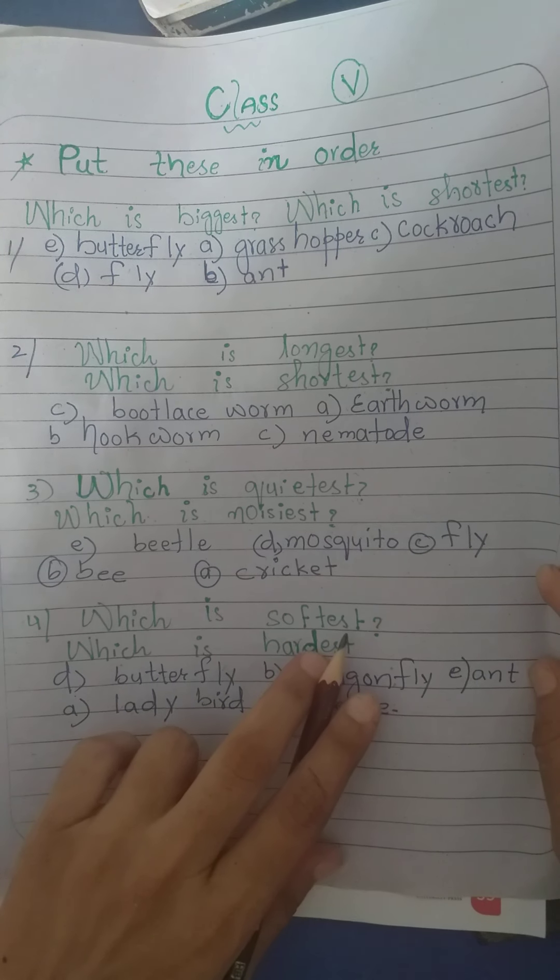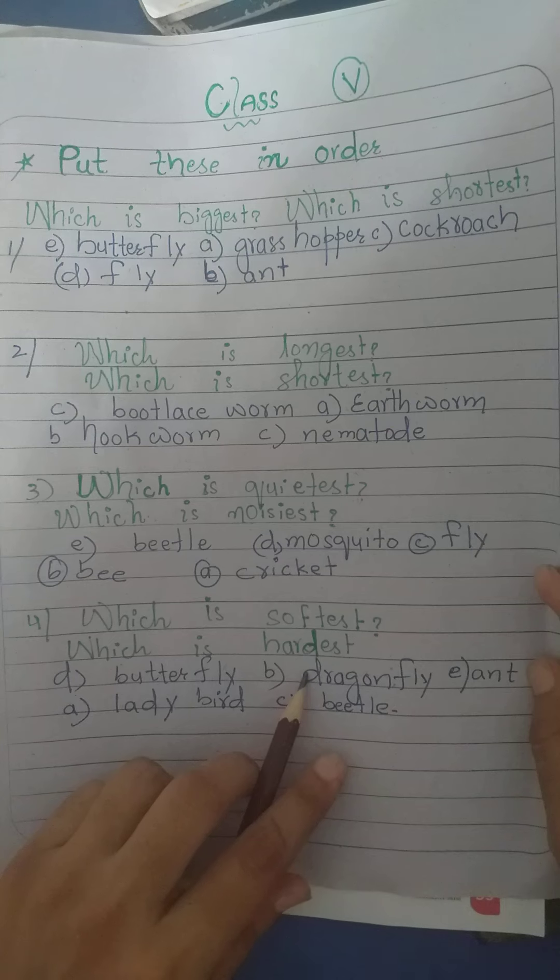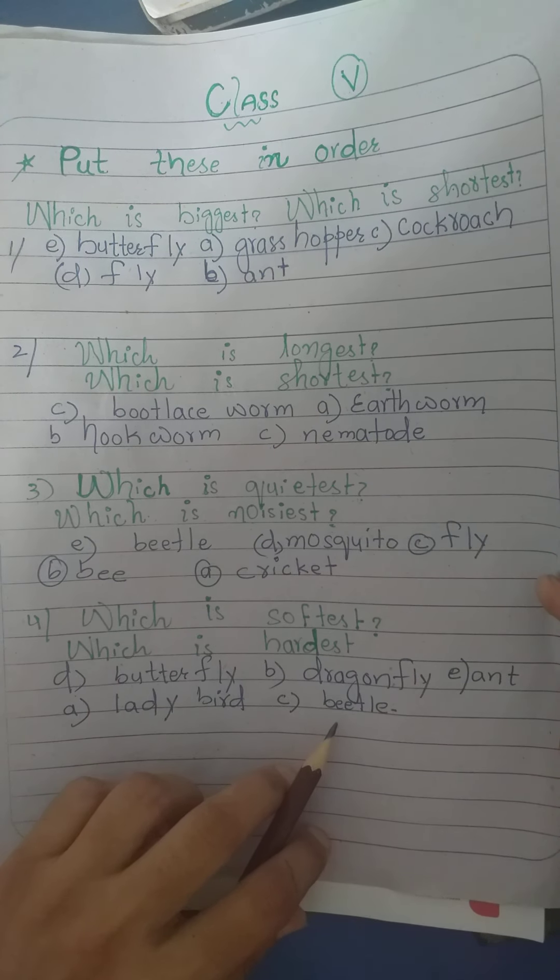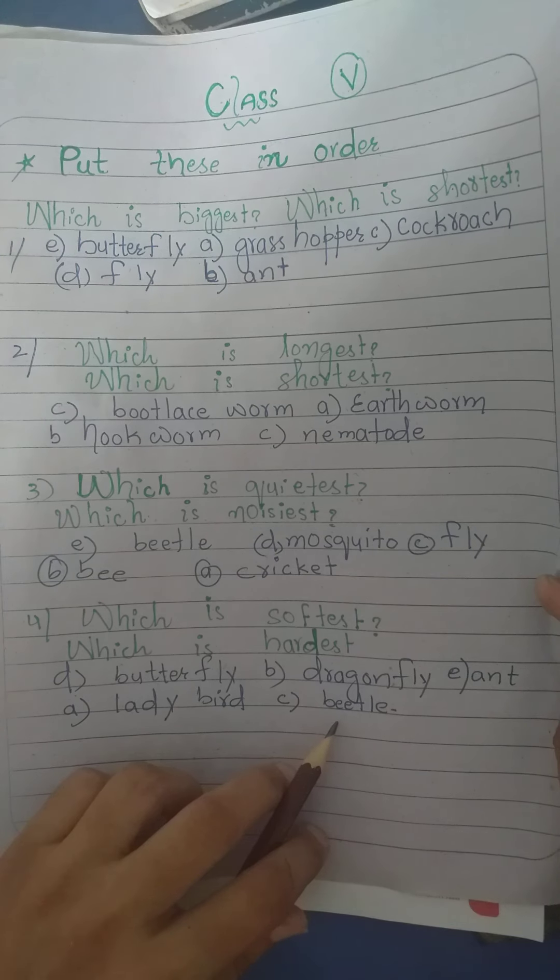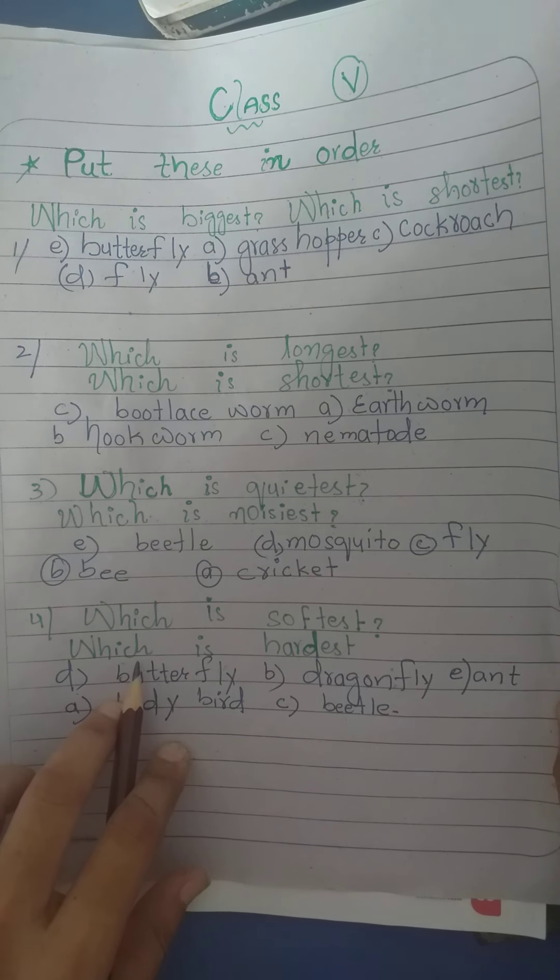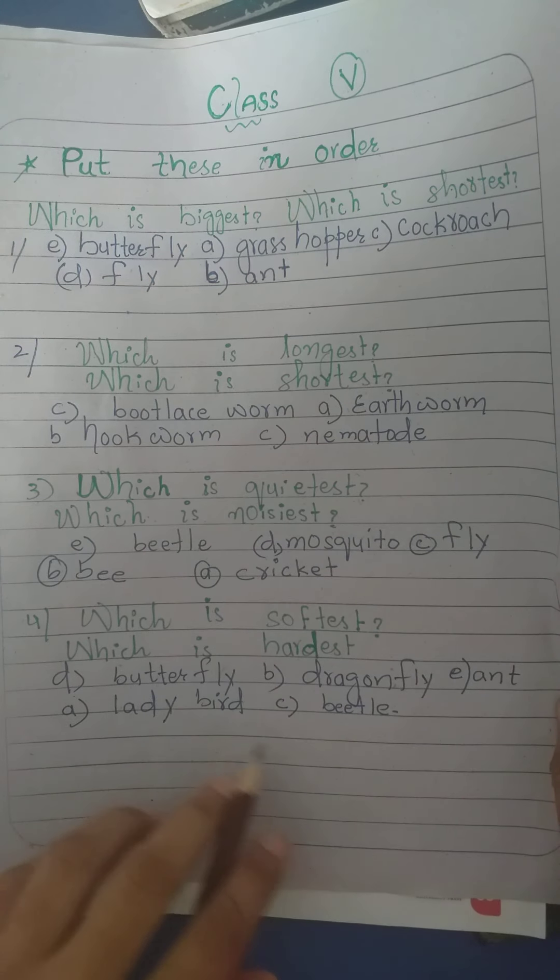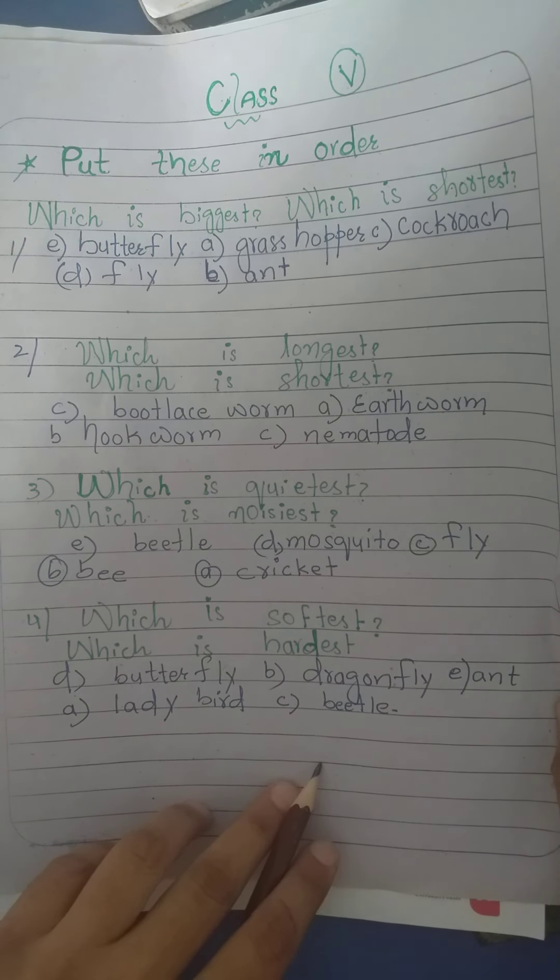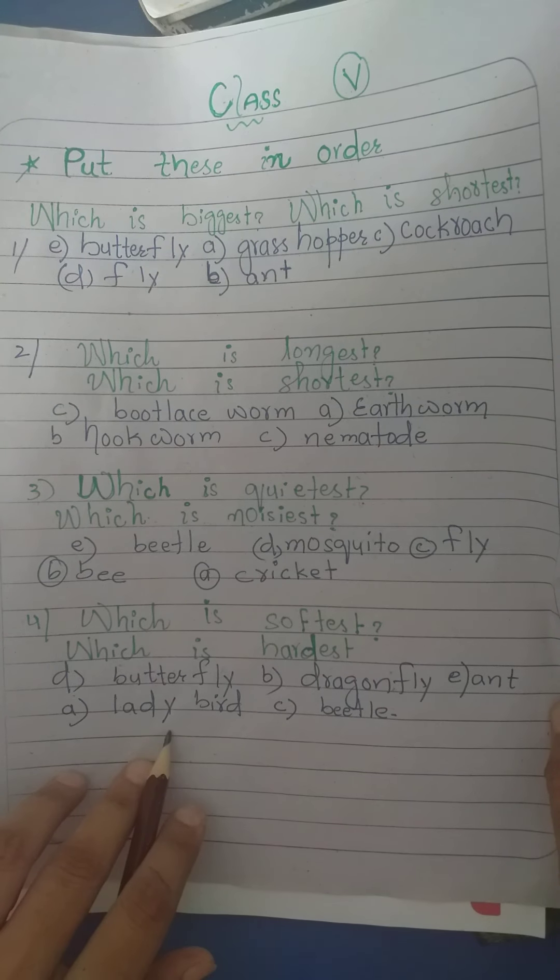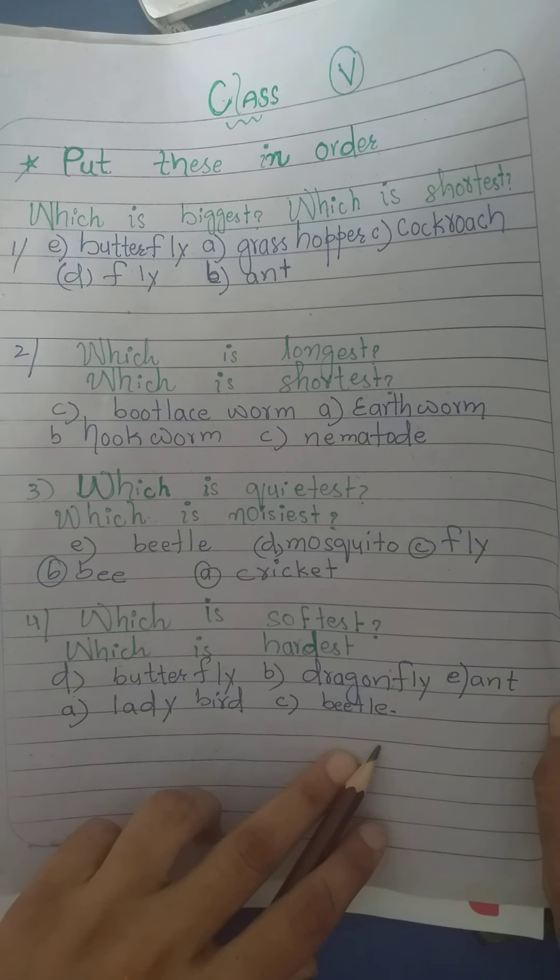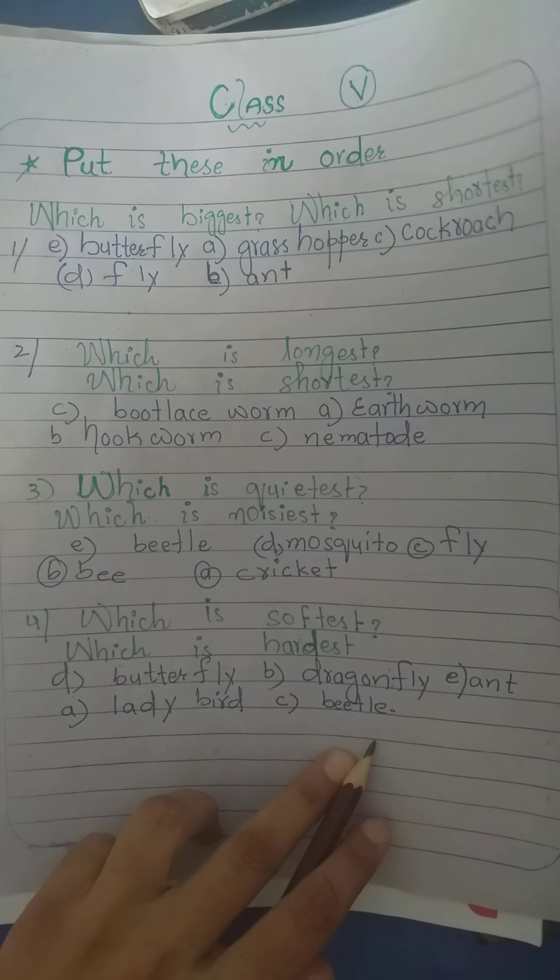Number 4. Number 4 is softest, which is hardest. So these all are put in order. So soft insects, which is soft insects, which is hard insects. So butterfly is softer, then dragonfly, and then ant, and then ladybird, and then beetle is a hardest insect. Ladybird is also hardest, and then hardest is beetle. Beetle is a hardest insect.